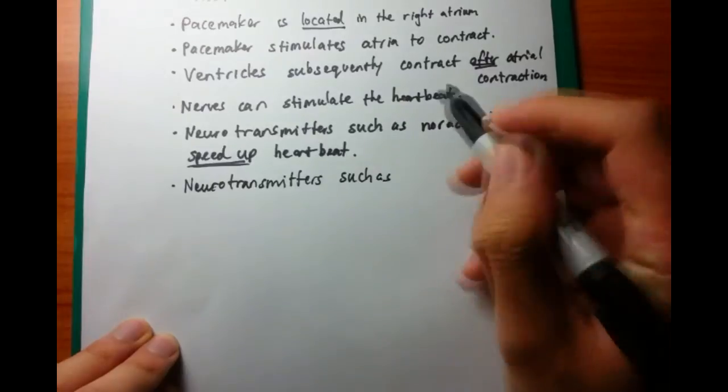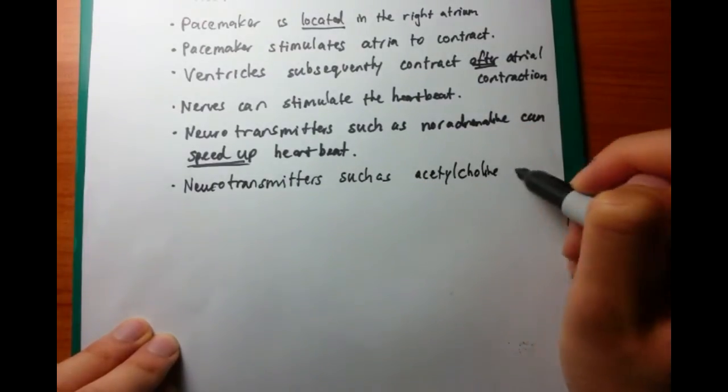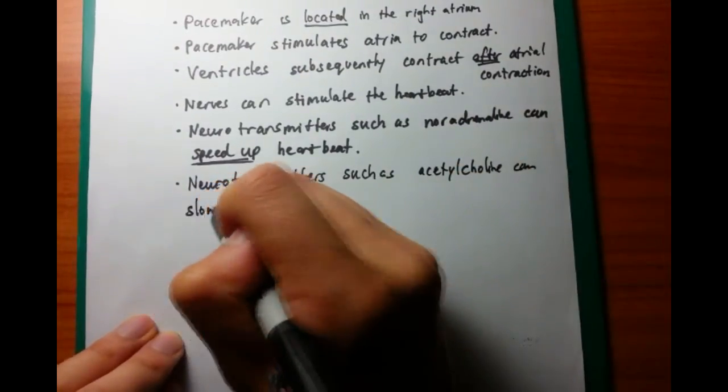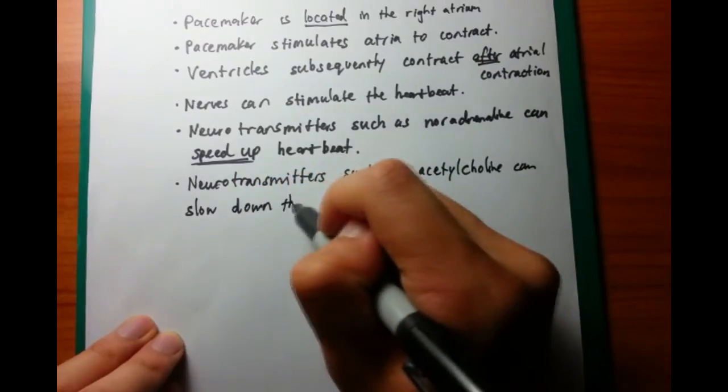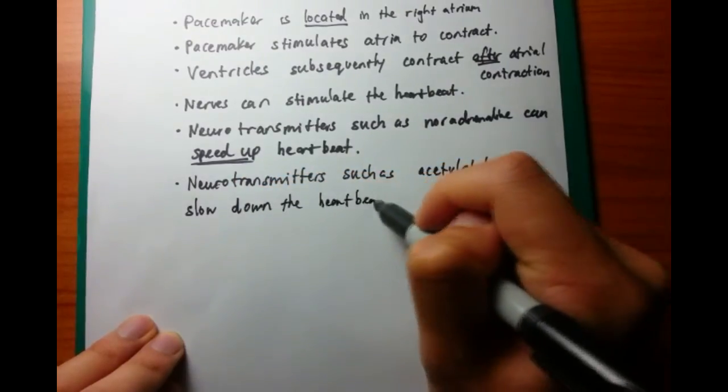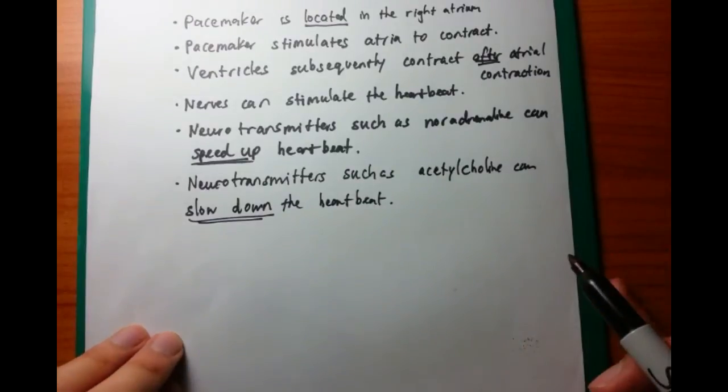On the other hand, you also have neurotransmitters which can slow down the heartbeat. These are neurotransmitters involved with the parasympathetic nervous system, and this one is acetylcholine. That can slow down the heartbeat.